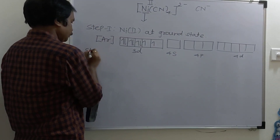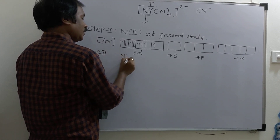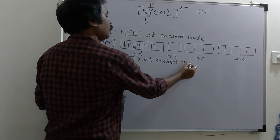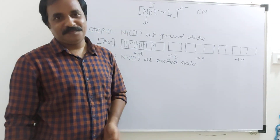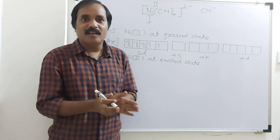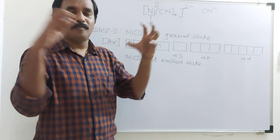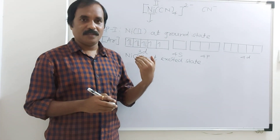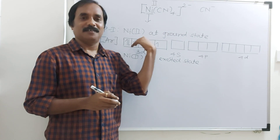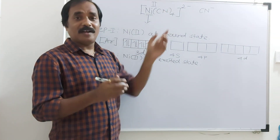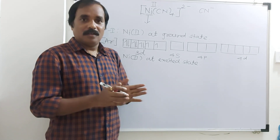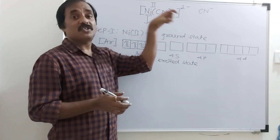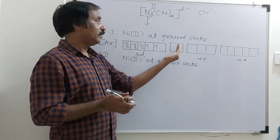Step number 2: Ni²⁺ at excited state. What is the condition for excitation? Remember: when ligands are weak, there is no excitation. When there is attack of weak ligands on the metal or metal ion, there is no excitation of electrons. In a complex, excitation involves inner pairing of electrons and shifting of outer shell electrons into inner shell. Here CN⁻ is a very strong ligand — in the spectrochemical series it is given. So due to attack of 4 strong ligands, there is inner pairing of electrons.